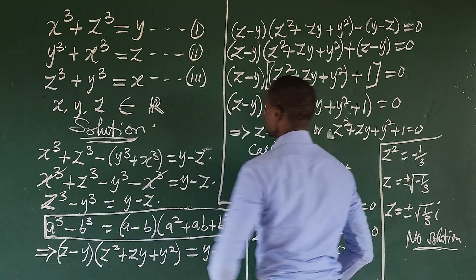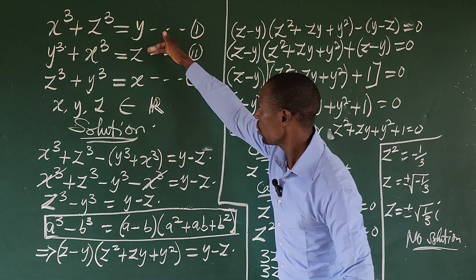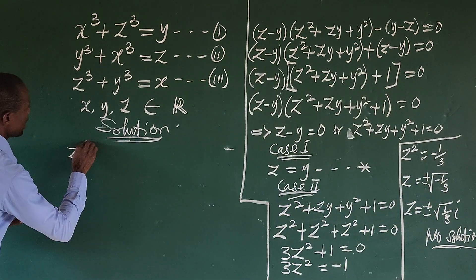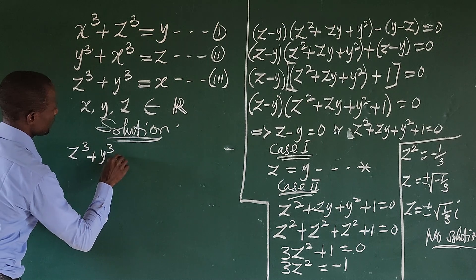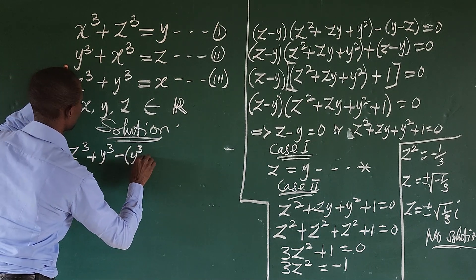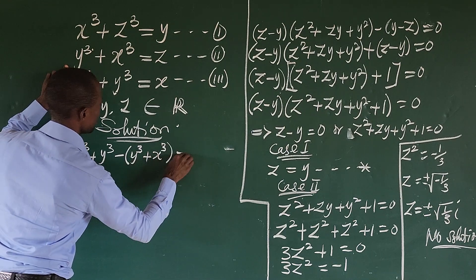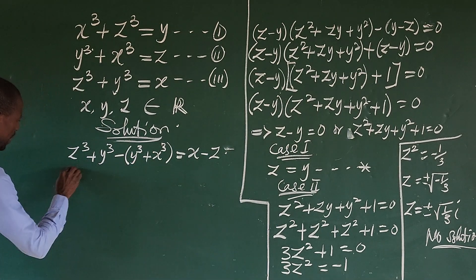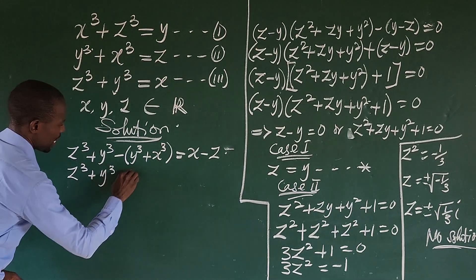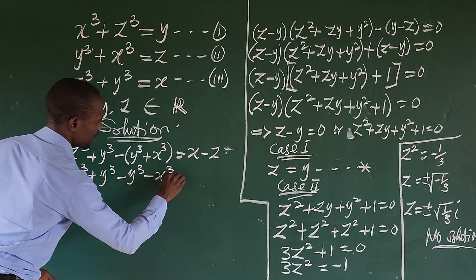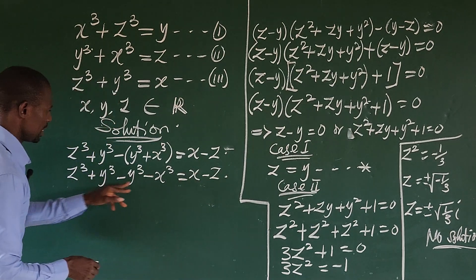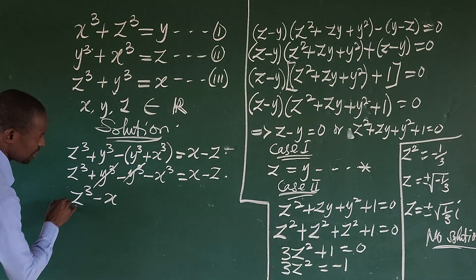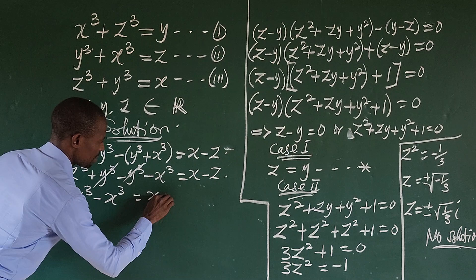Now let's subtract equation two from equation three. Equation three is z³ + y³, minus equation two which is y³ + x³, equals x − z. Opening the brackets: z³ + y³ − y³ − x³ = x − z. The y³ terms cancel, leaving z³ − x³ = x − z.